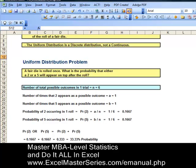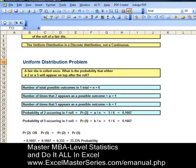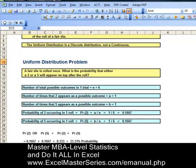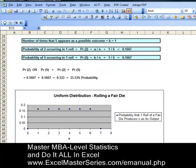The number of total possible outcomes in one trial is 6, so n = 6. The number of times that 2 appears as a possible outcome is 1, so a = 1. The number of times that 5 appears is also 1, so b = 1. The probability of 2 equals the probability of 5, which is 1/6 for each.